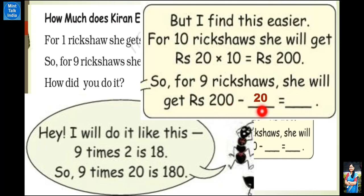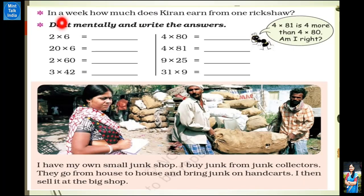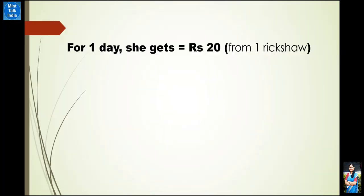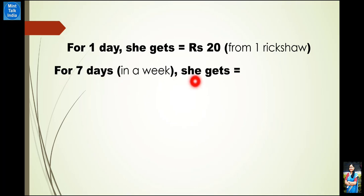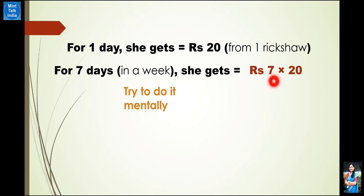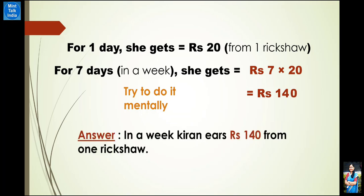How much does Kiran earn from one rickshaw in a week? For one day she gets ₹20 from one rickshaw. So for a week — 7 days — how much will she get? We will do unitary method: 7 multiply by 20. Try to do it mentally — 7 × 2 = 14, and 14 के side में 1 zero — that will become ₹140. So in a week, Kiran will earn ₹140 from one rickshaw.